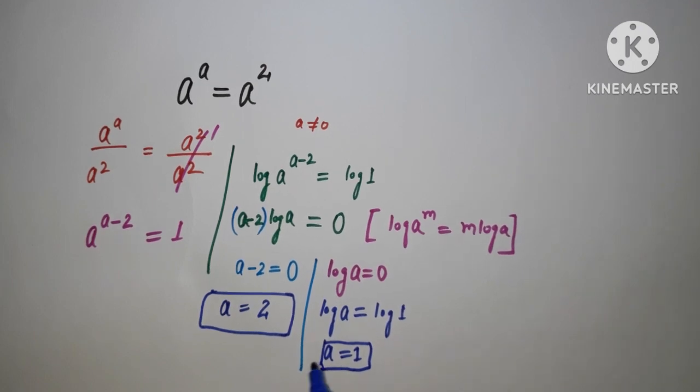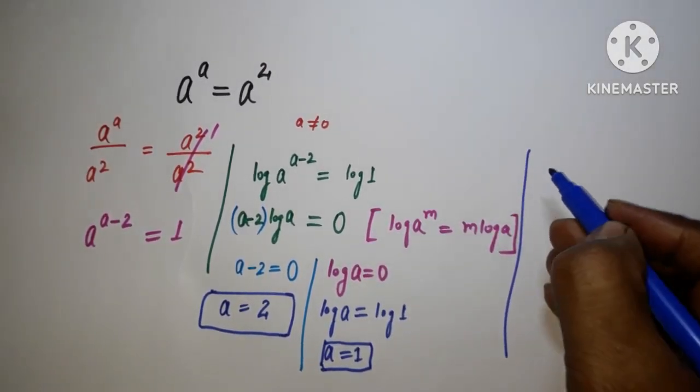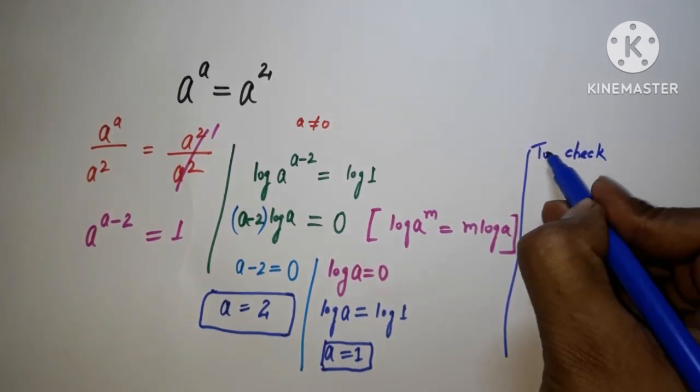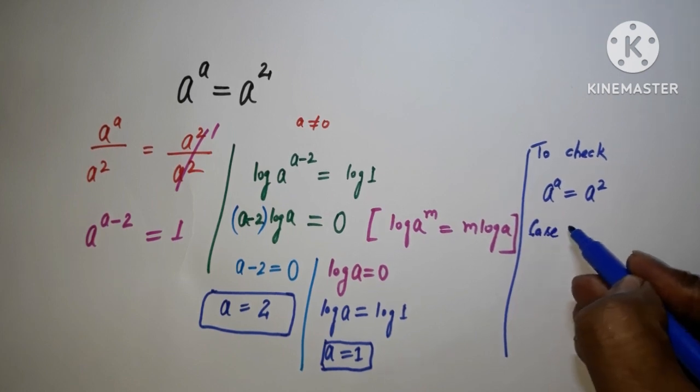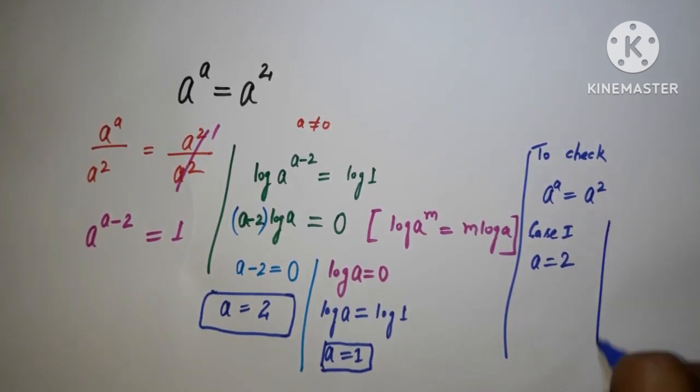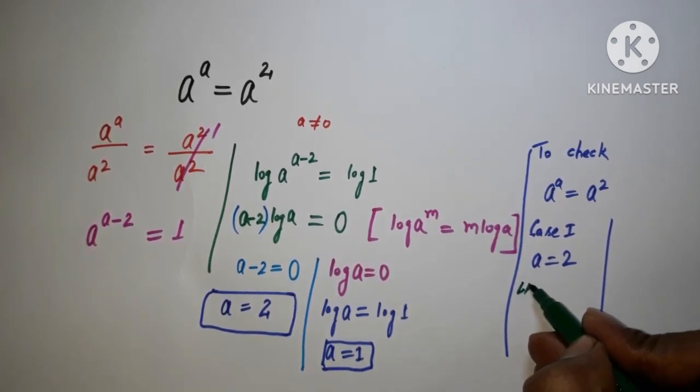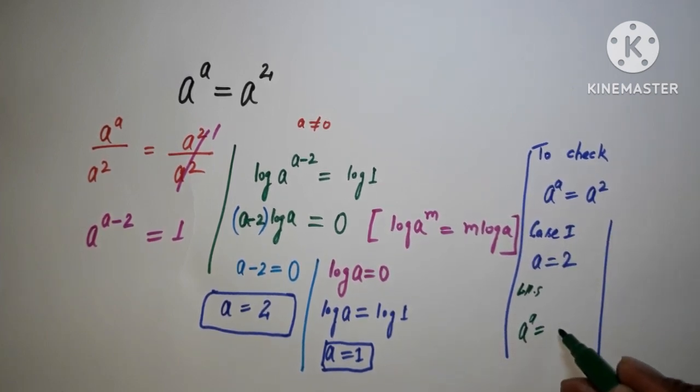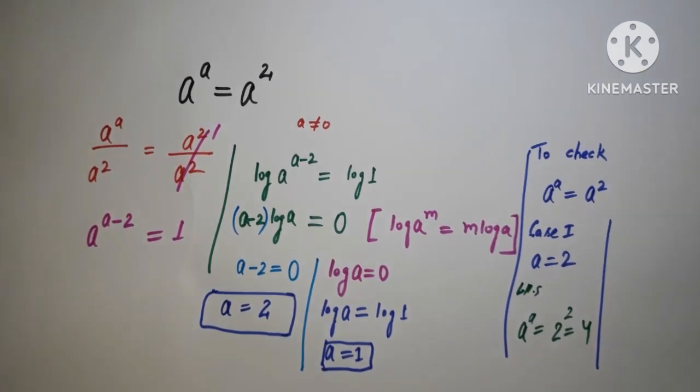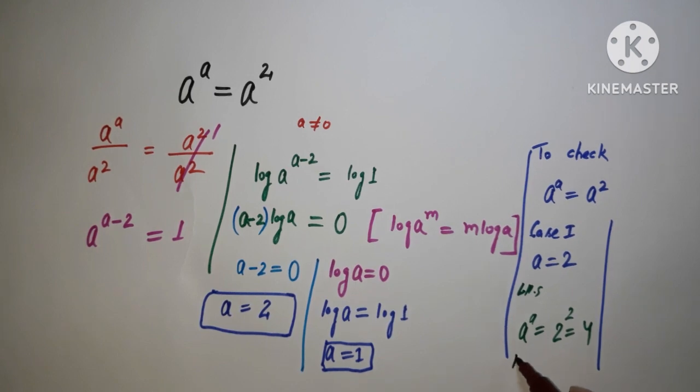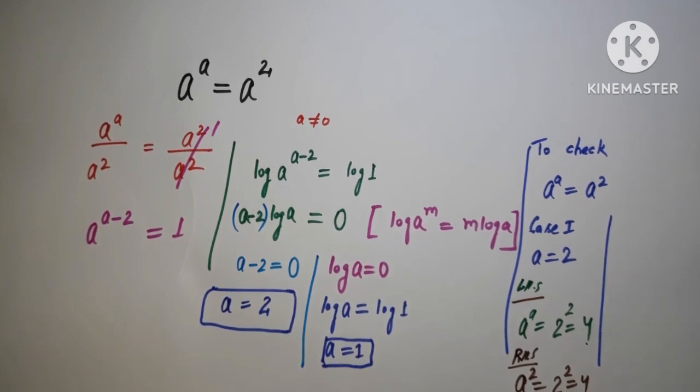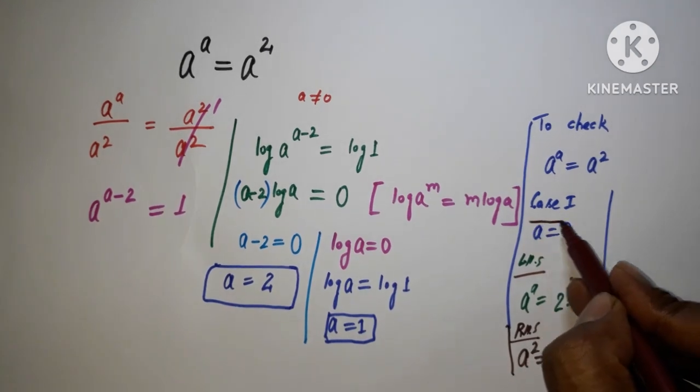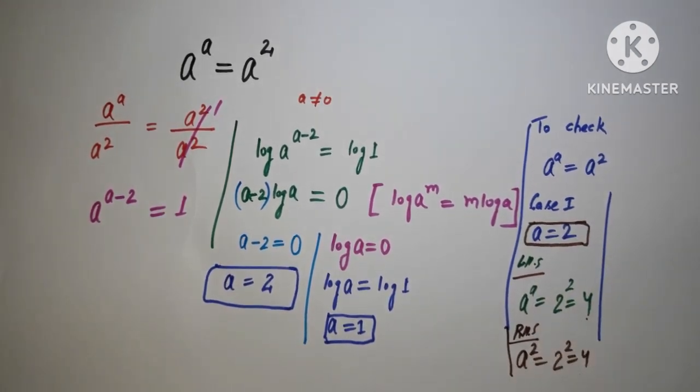To check, when a equals 2: on the LHS we have a to the power a, which is 2 to the power 2, giving us 4. On the RHS we have a squared, which is 2 squared, also 4. LHS equals RHS, so a equals 2 satisfies the equation.